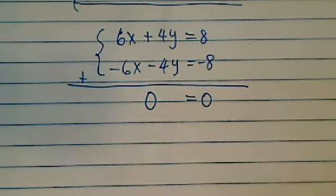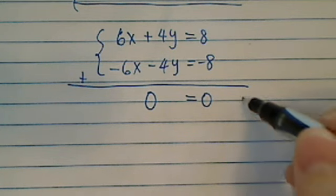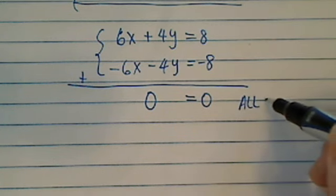A lot of students ask me, well what does that mean? I don't have any variables left. That's exactly right. So all this is saying is that there are all solutions, infinite number of solutions.